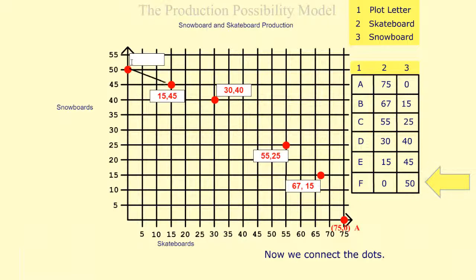Finally, we have dot F at 0 on the horizontal axis and 50 on the vertical axis.